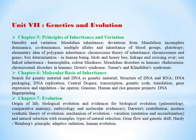Here we'll learn about what is heredity and variation, about Mendel's laws, deviations from Mendel's laws, incomplete dominance and co-dominance, multiple alleles, inheritance of blood groups, pleiotropy, elementary idea of polygenic inheritance. We'll learn about the theory of chromosomes, then sex determination in human beings, birds, honeybee, linkage and crossing over.